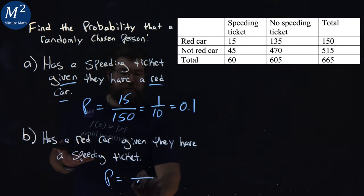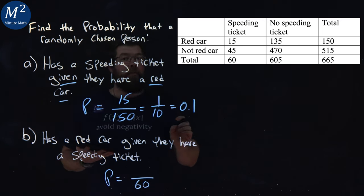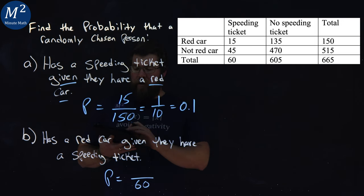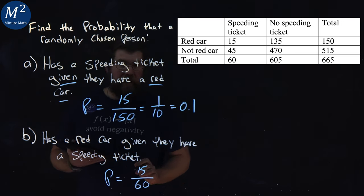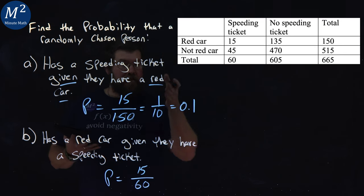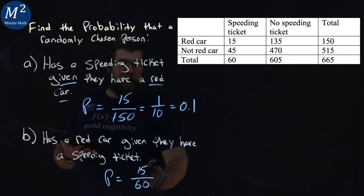So our probability here, our total is 60, and the probability that they have a red car out of that 60 is going to be 15 now. So given they have a speeding ticket at a 60, there are 15 people who have a red car.